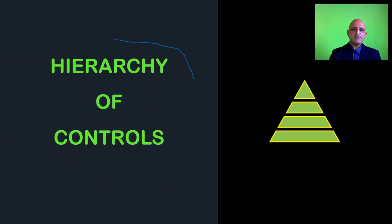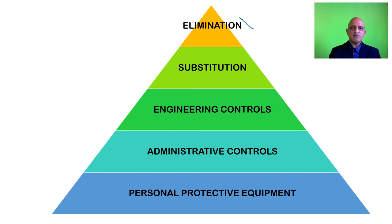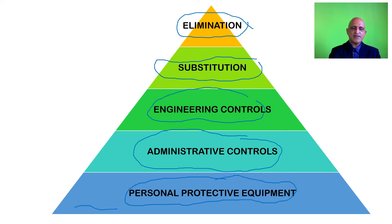We will look at the five controls and their hierarchy. The five controls are: elimination, substitution, engineering controls, administrative controls, and personal protective equipment. Personal protective equipment provides the last line of defense against the biological agent, which is why it is placed right at the bottom of this hierarchy.